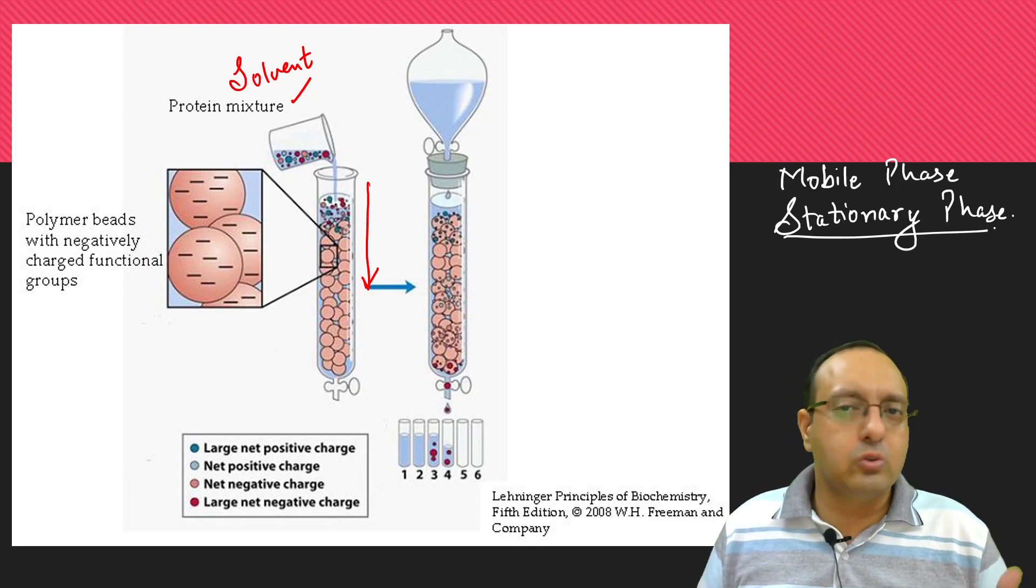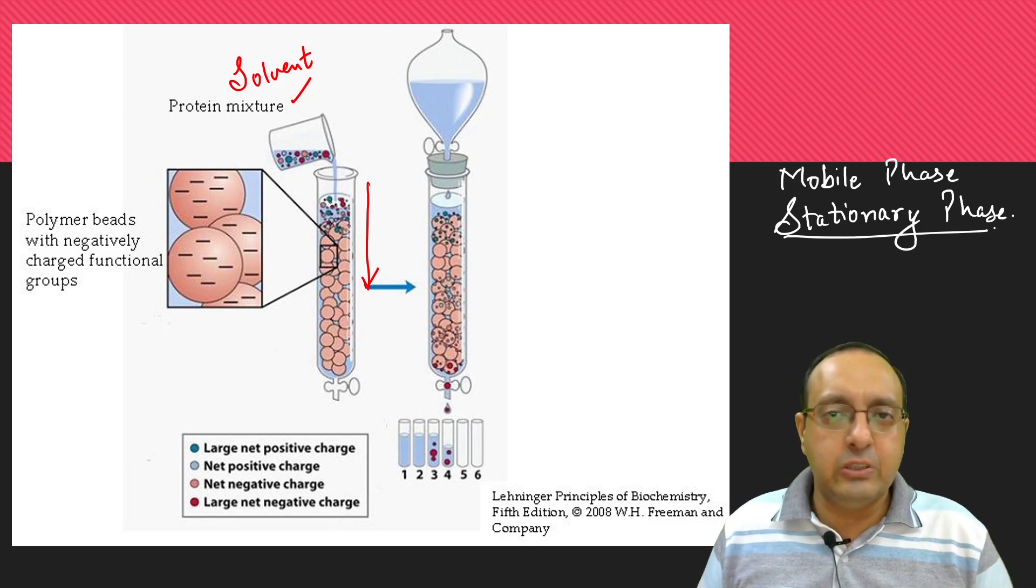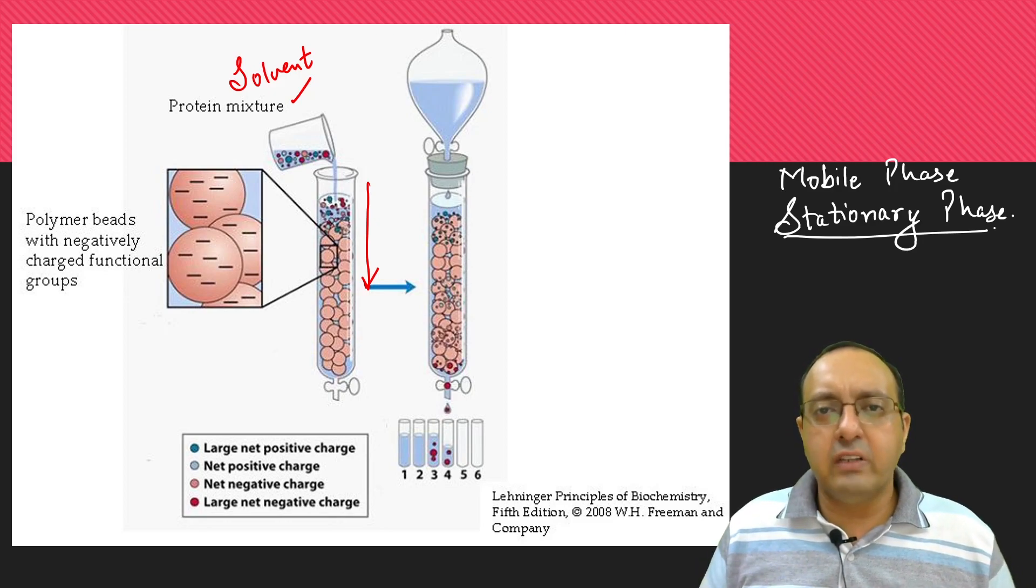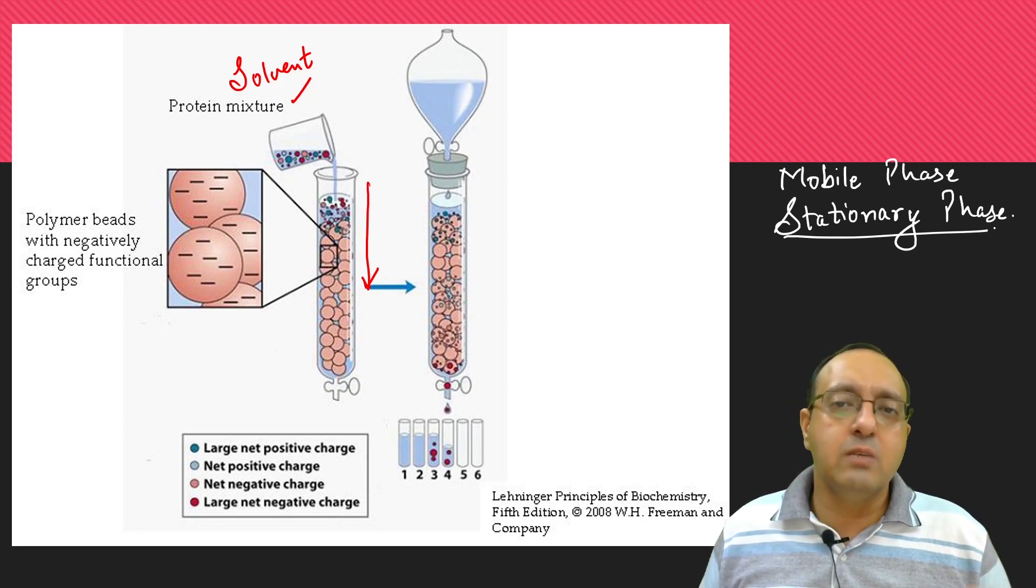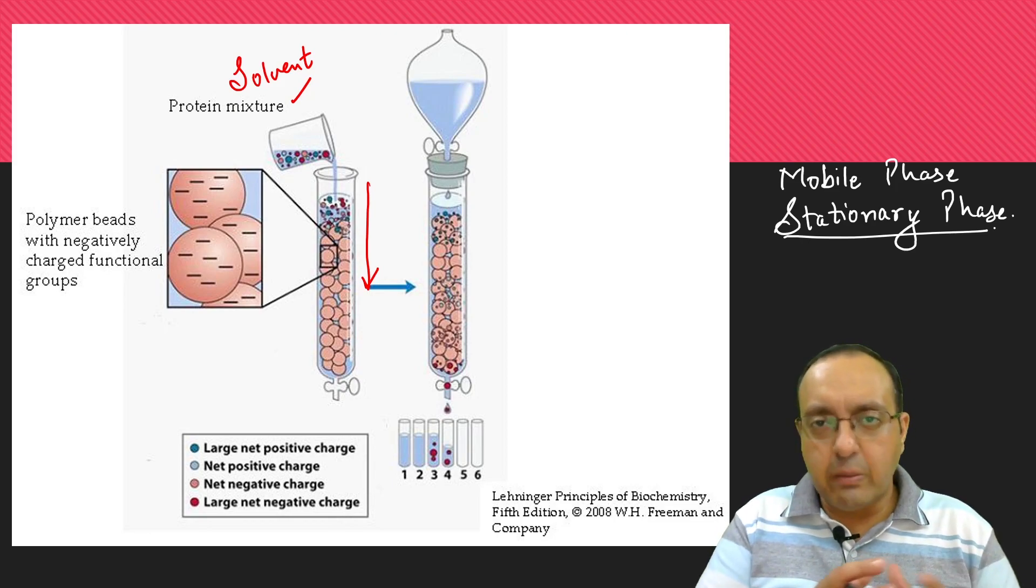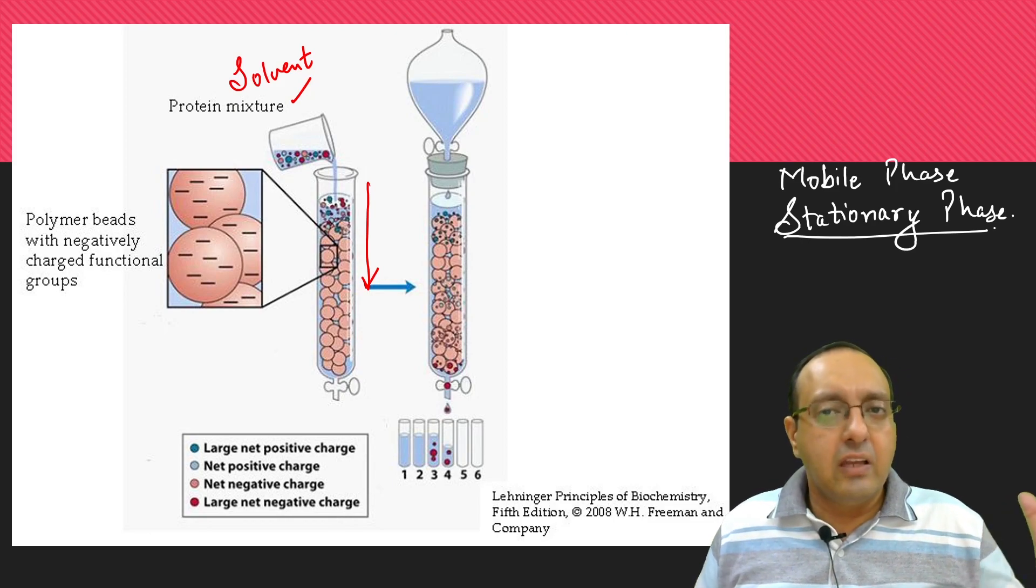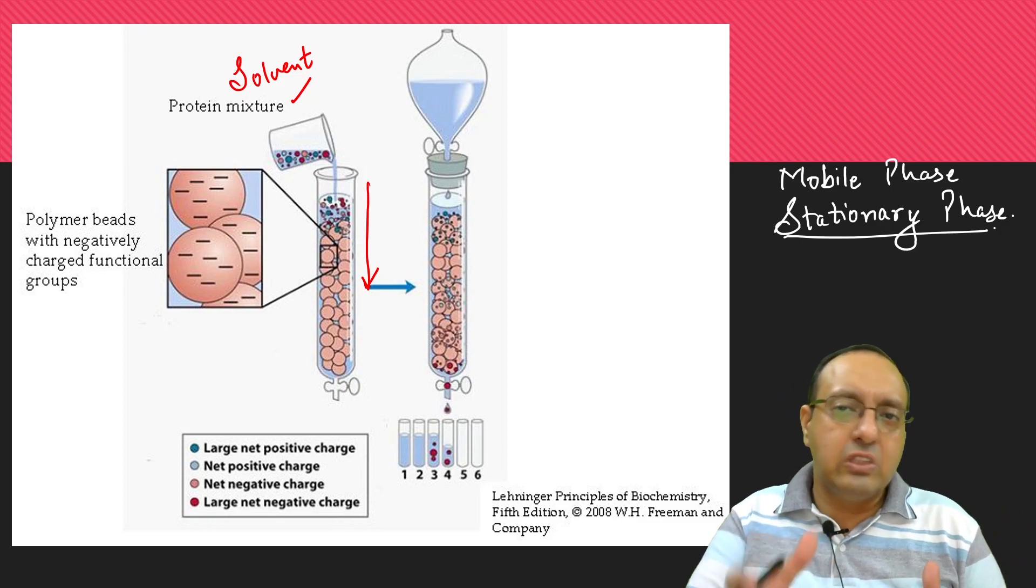Silica, agarose, cellulose, these are commonly used stationary phases, and solvents like acetone, organic solvents, water buffers, different types of buffers are normally used as the mobile phases. So the separation occurs between the interaction of the mobile phase with the stationary phase.